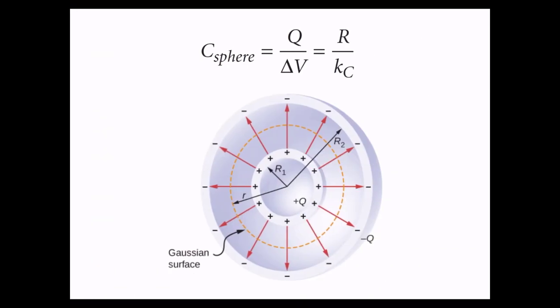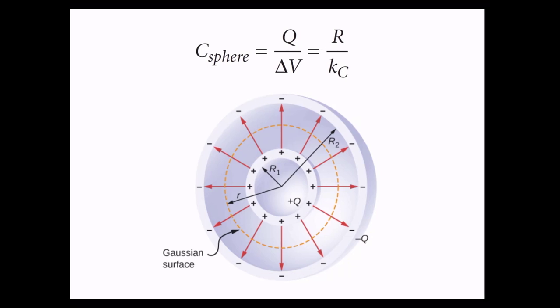As you see on the page, C-sphere — meaning capacitance of a spherical capacitor — it is Q over delta V, which equals R over Kc. That is enough for this part.